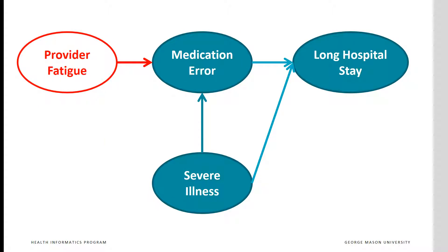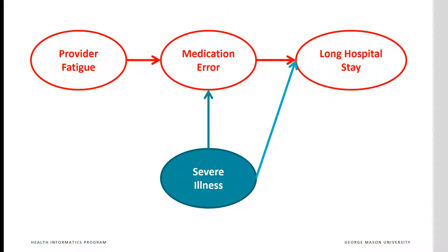Let us add provider fatigue into the network. As the number of variables increases, a causal network can describe the relationship among any pair of variables. Here, provider fatigue is shown to cause medication errors, and medication errors are shown to cause long hospital stays. These three variables are said to be in a causal chain. Fatigue causes errors, and errors cause longer stays.